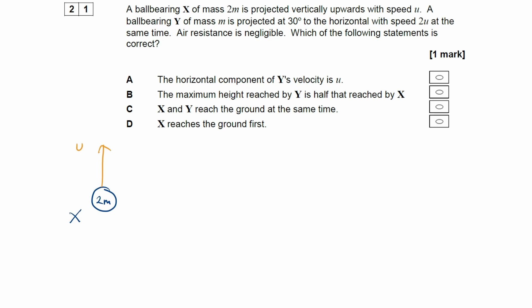A ball bearing Y of mass m, so here is Y, this has a mass of m, that's projected at an angle of 30 degrees to the horizontal with a speed of 2u. So here is the velocity, the velocity is a bit bigger, 2u. And then we're told the angle to the horizontal is 30 degrees.